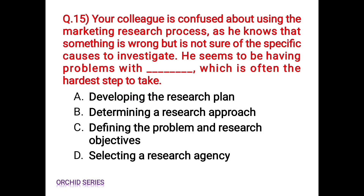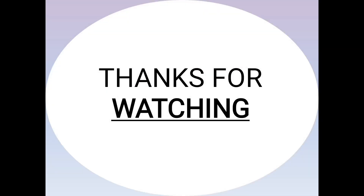Last question: your colleague is confused about using the marketing research process — he knows something is wrong but is not sure of the specific causes to investigate. He seems to be having problems with blank, which is often the hardest step to take. Options: Option A: developing the research plan, Option B: determining a research approach, Option C: defining the problem and research objectives, Option D: selecting a research agency. The correct answer is Option C, defining the problem and research objectives. If you find this video useful, don't forget to like, share and subscribe to my channel.